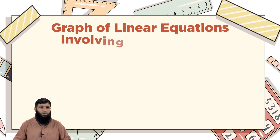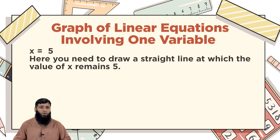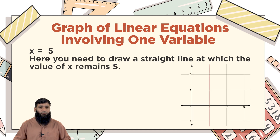Let's have an example: x = 5. This is an equation with just one variable, x. Whenever you have an equation with just one variable, you will get a straight line. For x = 5, you can see a vertical red line. Throughout this straight line the value of y is changing — for example, y = 5 at one point and y = 10 at another — but the value of x remains 5 throughout. So the equation of this straight line is x = 5.